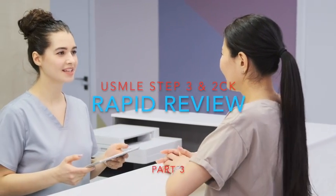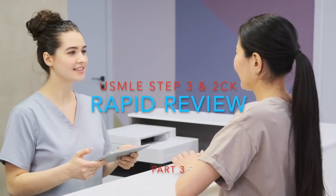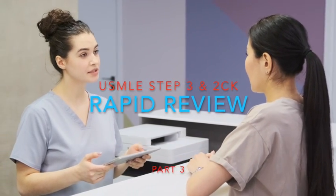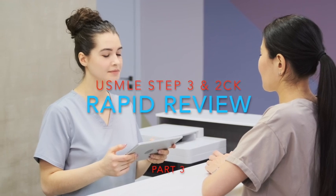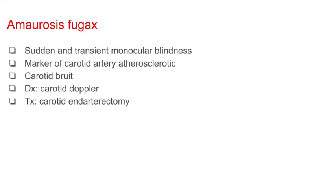Let's start Part 3 of our extremely high-yield review for the USMLE Step 3 and the USMLE Step 2 CK. Amaurosis fugax is an extremely high-yield condition that you can see on your USMLE Step 3 CCS cases or even in your MCQs. So let's take a closer look at this.